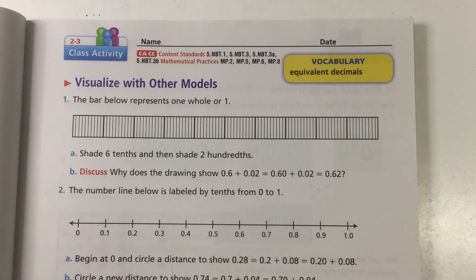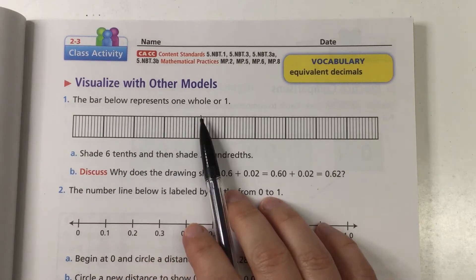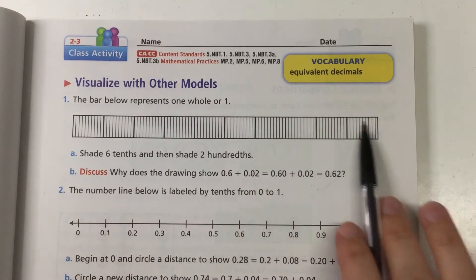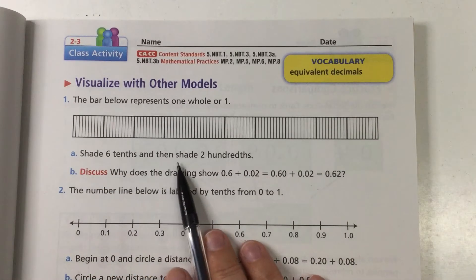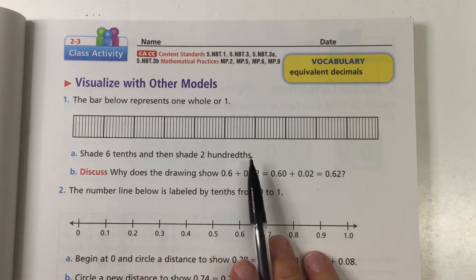Hi 5th graders, here we are lesson 3 of unit 2 and we're going to be looking at decimal numbers but looking at them with models and helping us to visualize what the decimal numbers stand for. So here the bar below represents one whole or one, so this entire bar is one. Shade 6 tenths and then shade 2 hundredths.